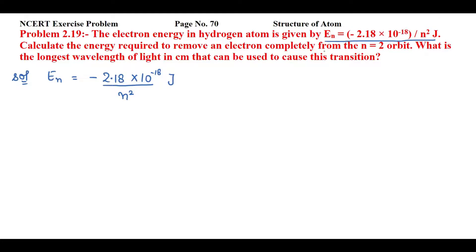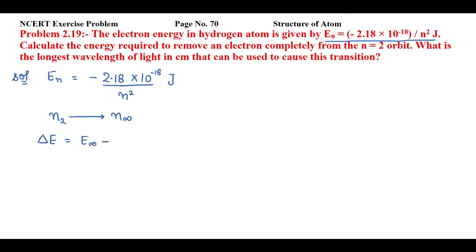In this question, you have to remove the electron from the second orbit to the infinite orbit. For this, you have to find the energy required. So we have to find the energy difference between the infinite orbit and the second orbit. That means we have to find the value of delta E, which equals the energy of the infinite orbit minus the energy of the second orbit.